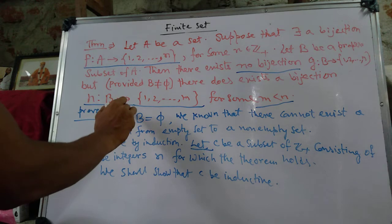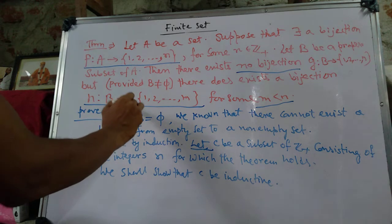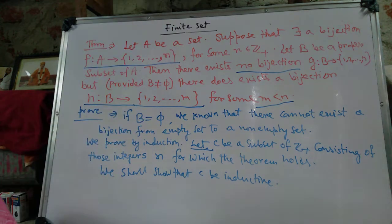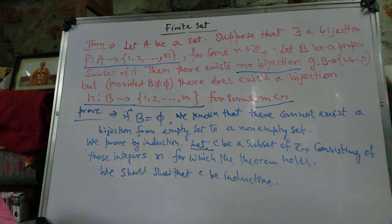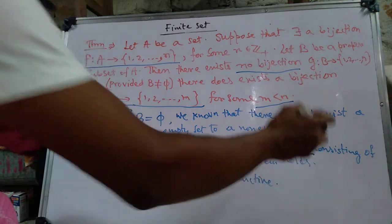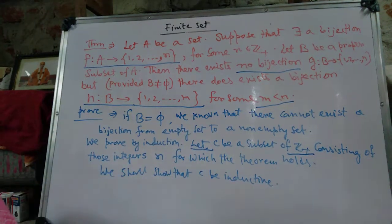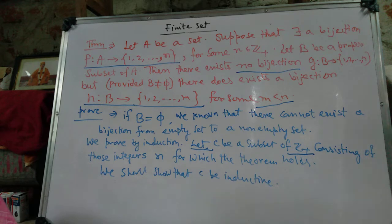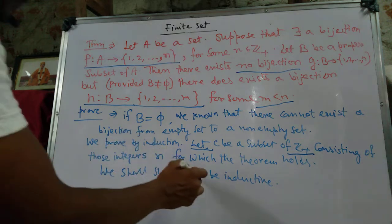If B equals phi, then we know that there cannot exist a bijection from the empty set to a non-empty set. Proof by induction: let C be a subset of Z plus consisting of those integers for which the theorem holds. We shall show that C is inductive.